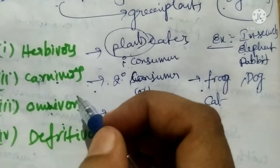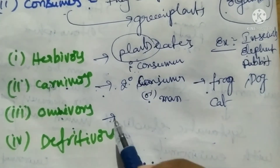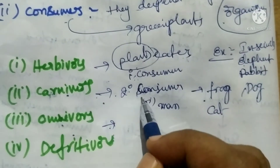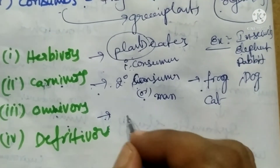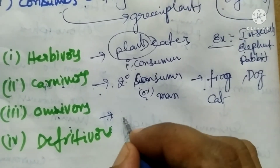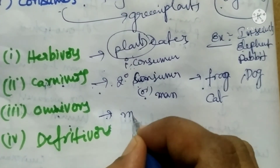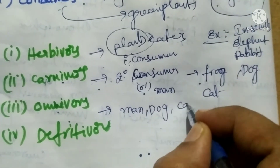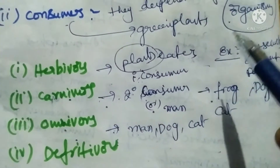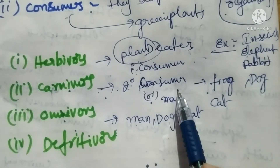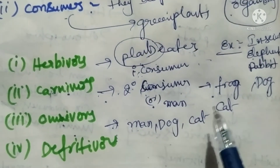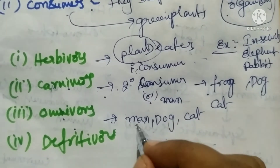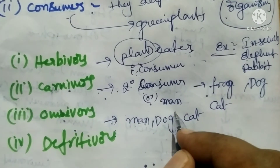Omnivores means these living beings depend on both the primary consumers and secondary consumers for their food. Those that eat both vegetarian and non-vegetarian food are omnivores. For example, man, dog, cat. Some are also tertiary consumers.